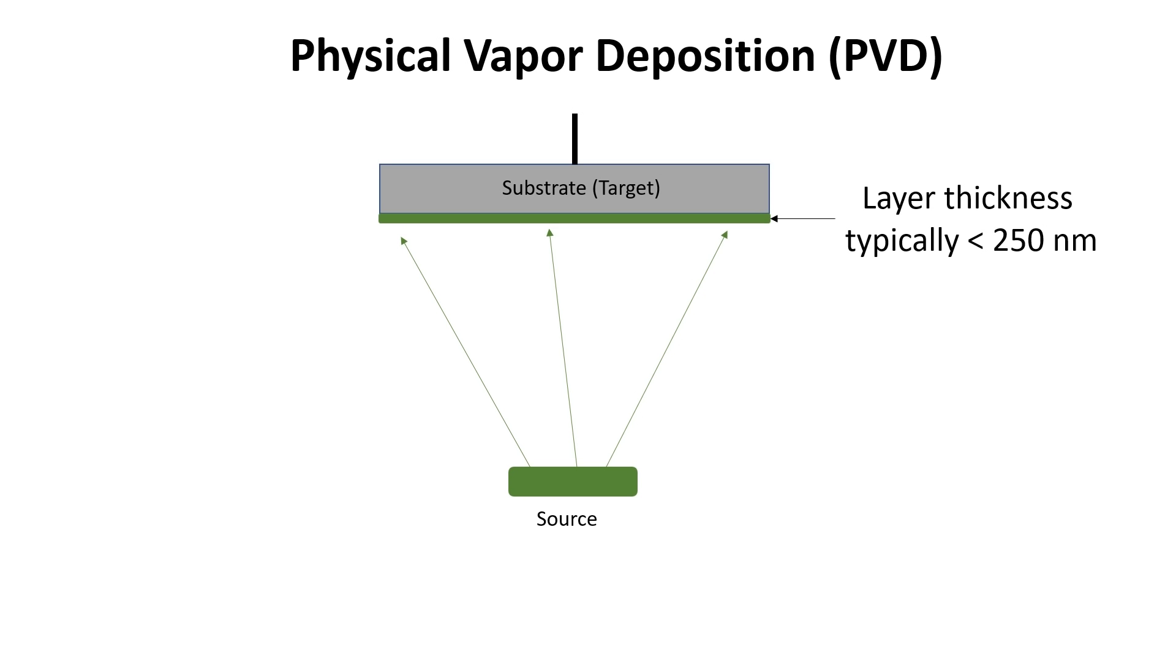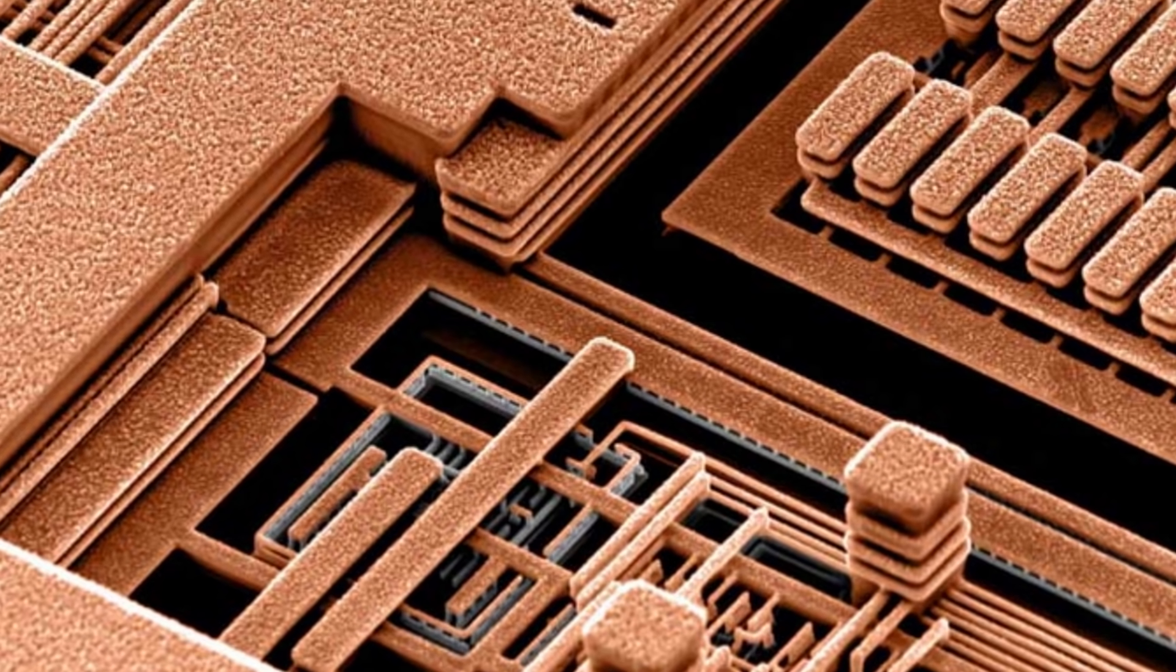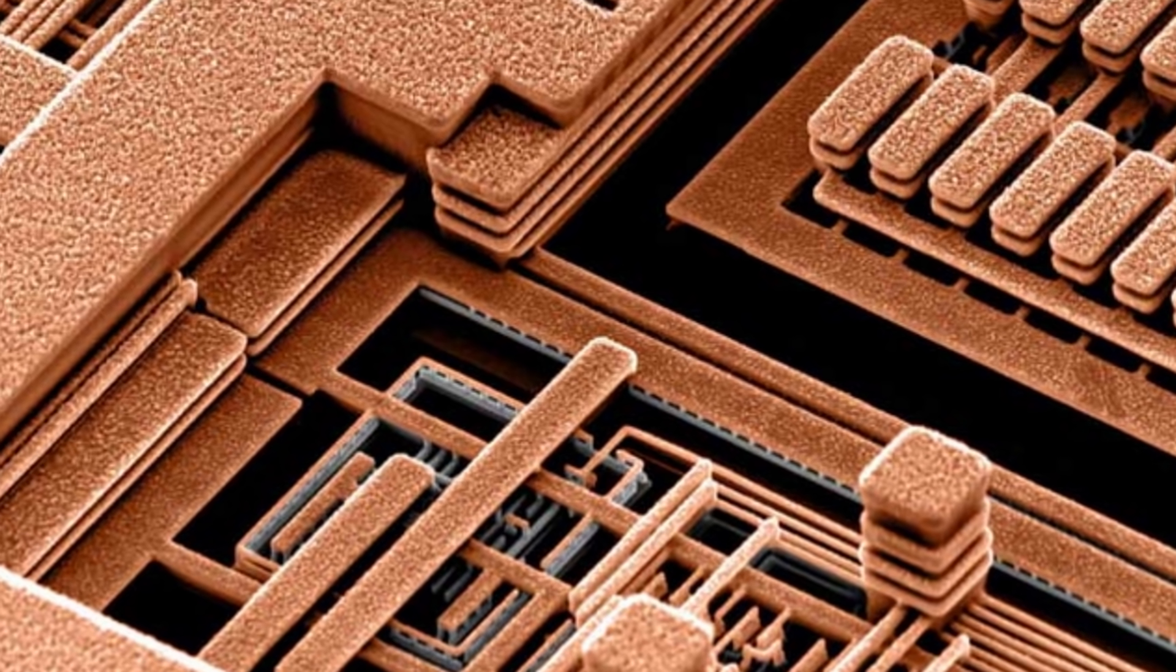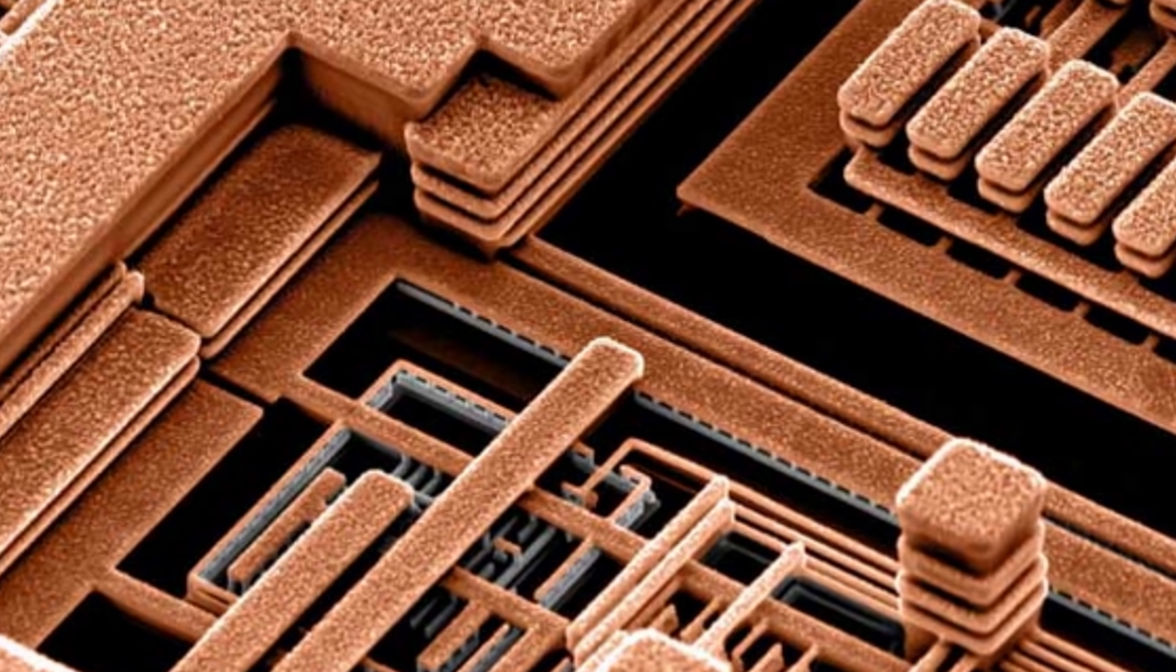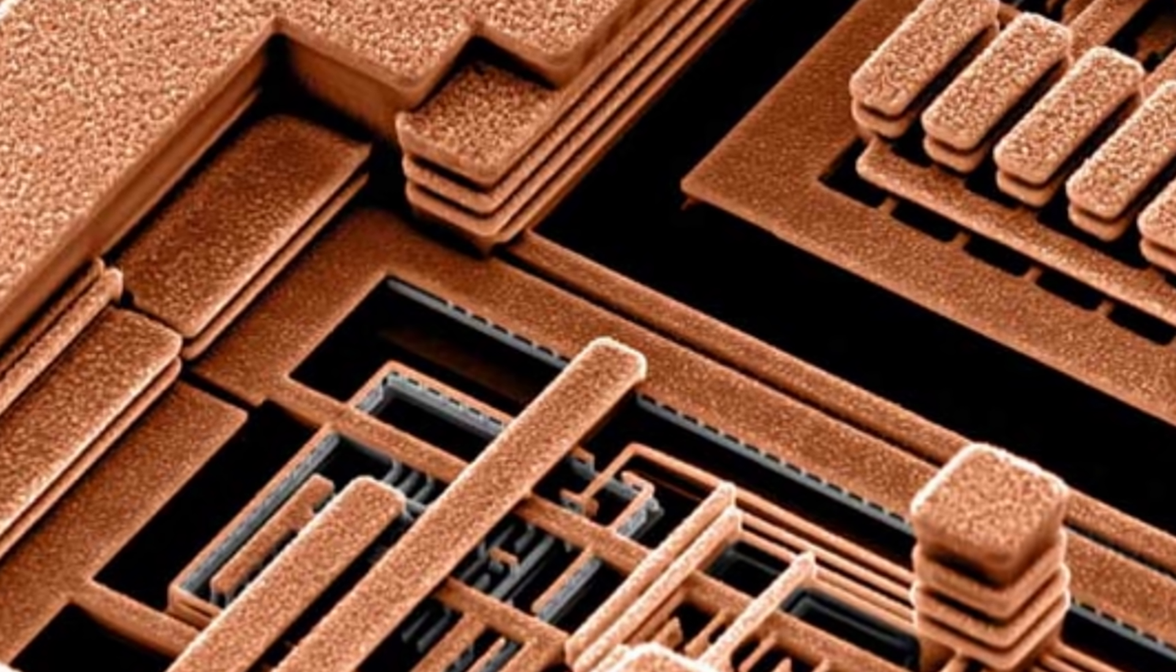This method is typically used to deposit films with a thickness below 250 nm. By the way, PVD is not only a key technology in optical coatings, but it is also frequently used in the manufacture of integrated circuits to apply all the layers that, after patterning, together form a microchip.